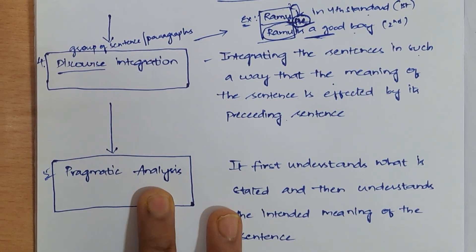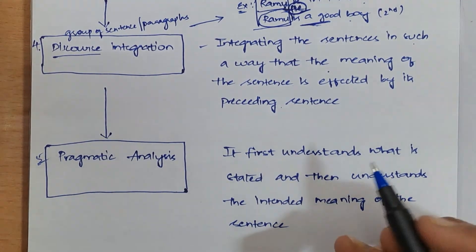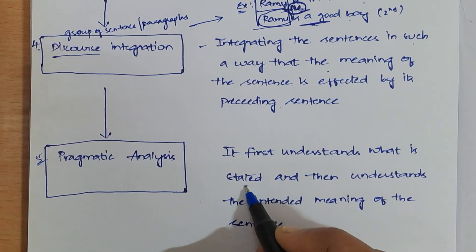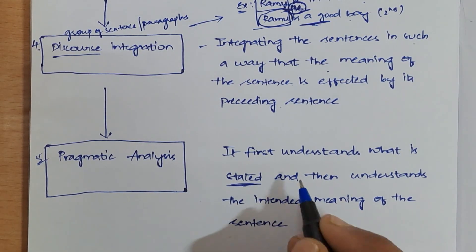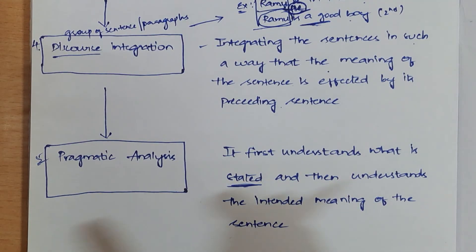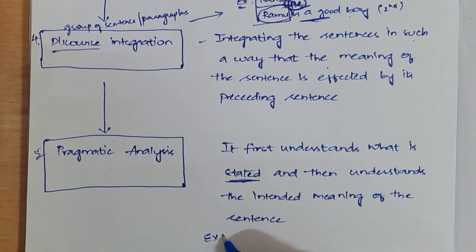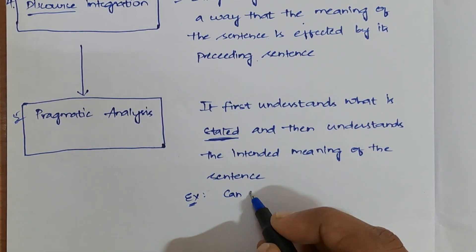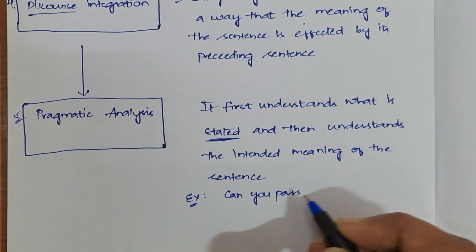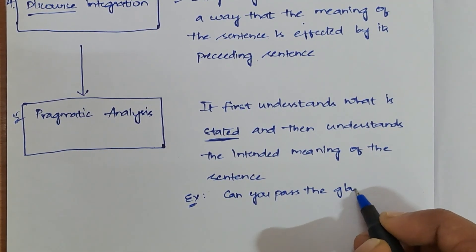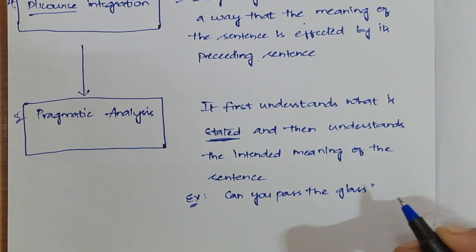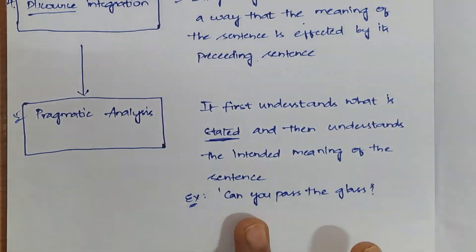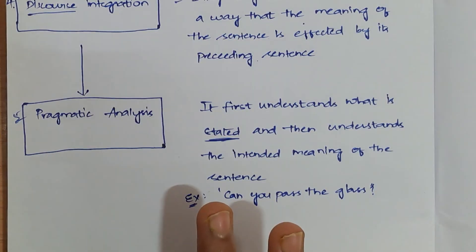The last phase of NLP is pragmatic analysis. It first understands what is stated in the given sentence, and then understands the intended meaning of that sentence. For example, consider: 'Can you pass the glass?'